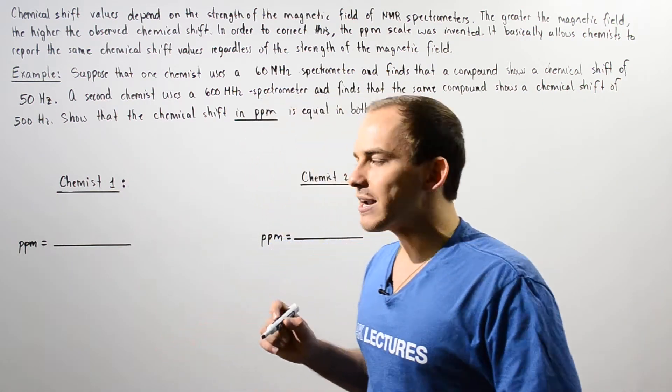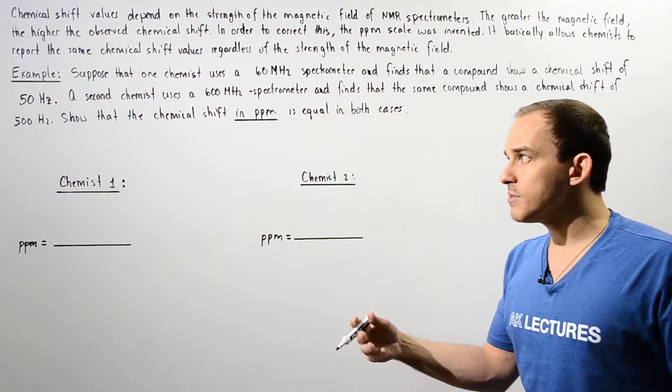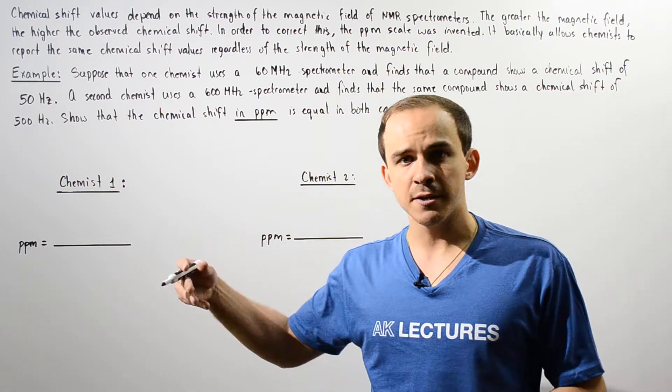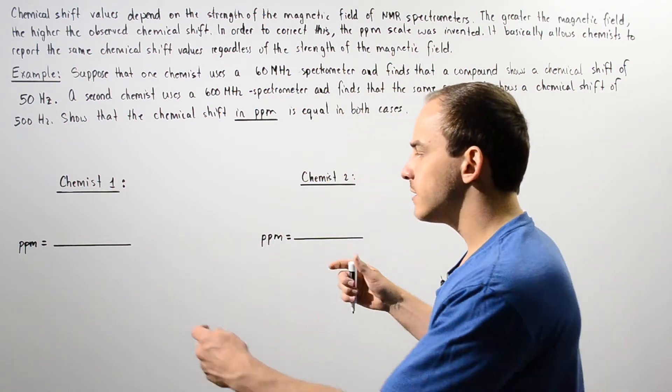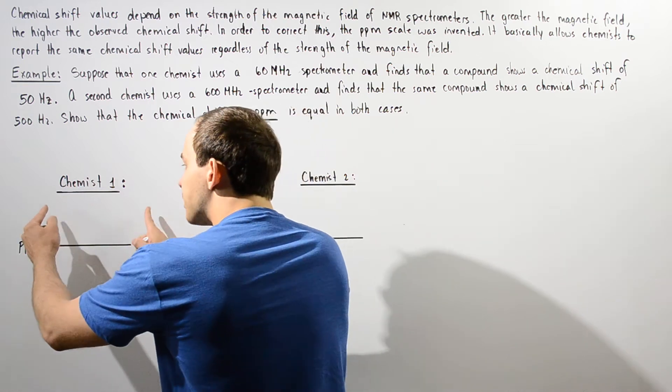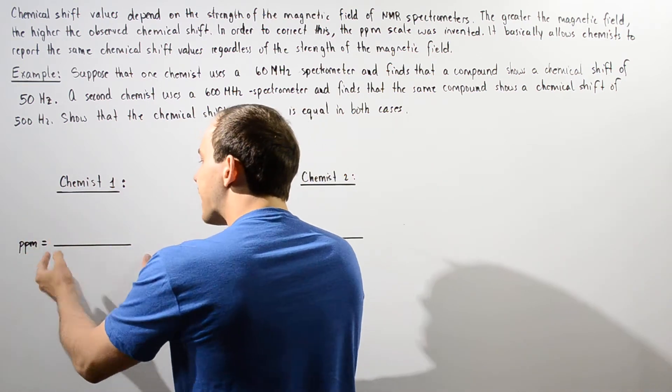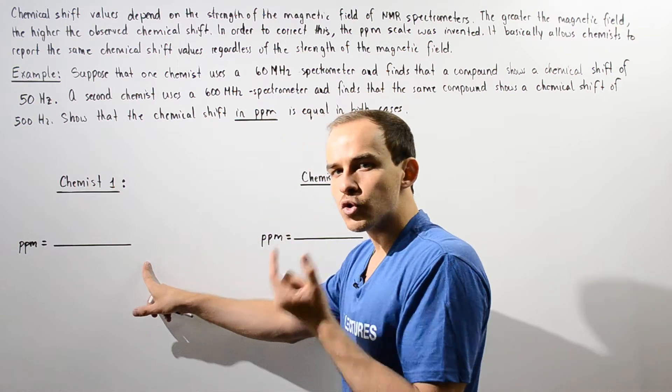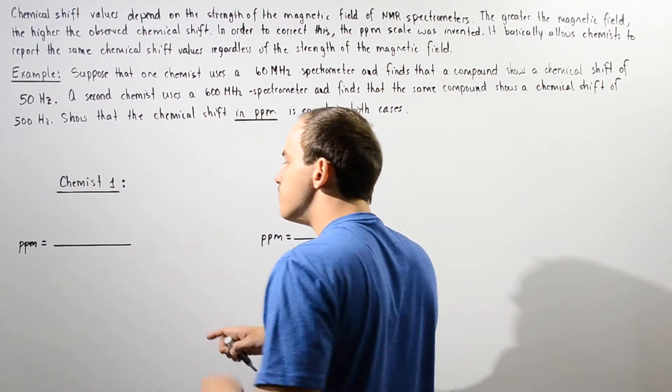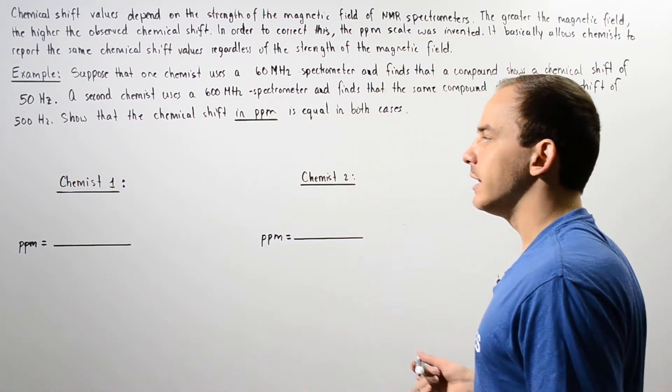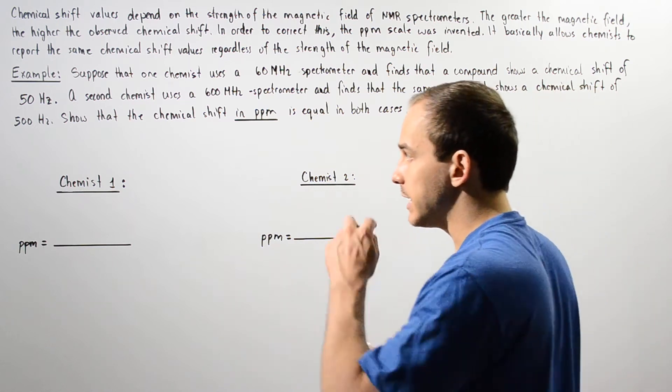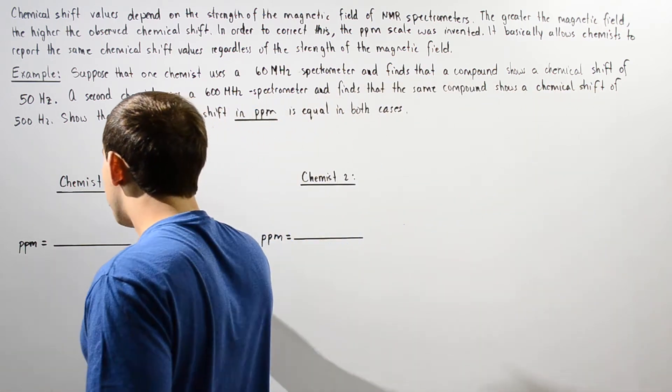So the equation that allows us to transform the chemical shift in hertz into ppm is basically given by: we take the chemical shift in hertz and divide it by the rating of that spectrometer in hertz and we multiply it by 1 million and we get the parts per million.